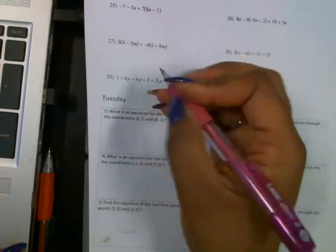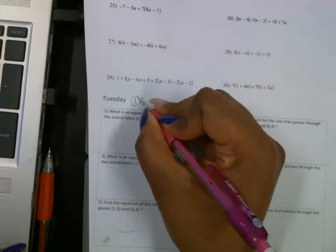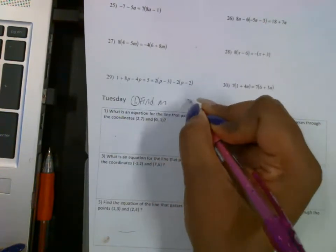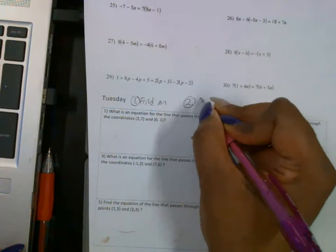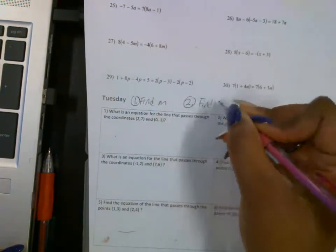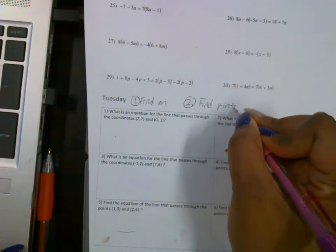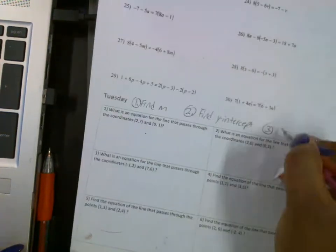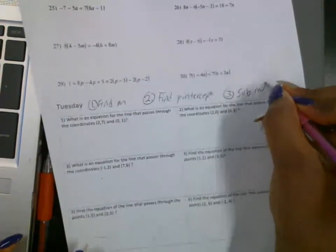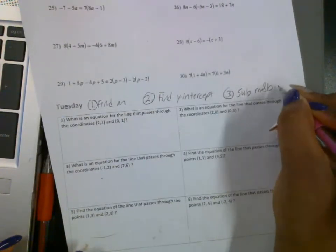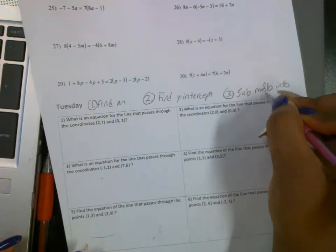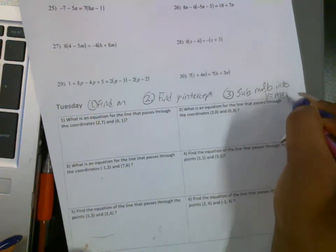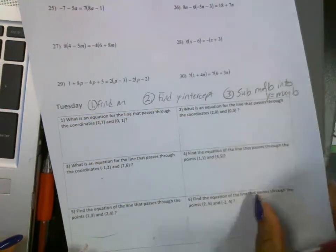Remember when you write an equation, there's three steps. The first step is to find the slope, find m. The second is to find the y-intercept. And last is to substitute the m and the b into the slope-intercept form. So sub m and b. And what are we substituting it into? Slope-intercept form, which is y equals mx plus b. And there you have a linear equation.